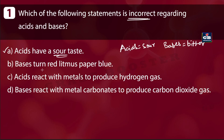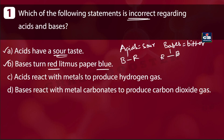The next option is 'bases turn red litmus paper to blue.' Is it true? Yes — bases turn red litmus to blue, whereas acids turn blue litmus to red. So this is also a correct statement, and this is not our answer. We need an incorrect statement.